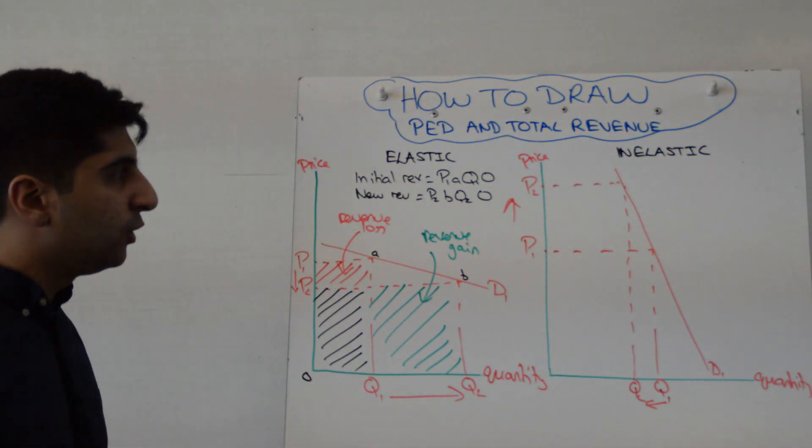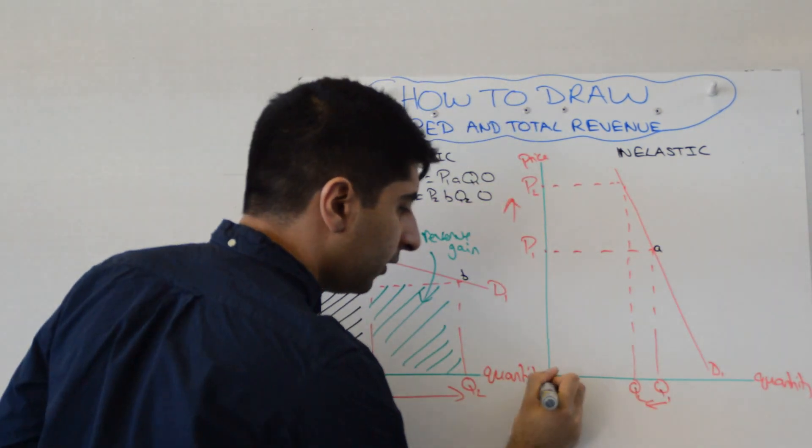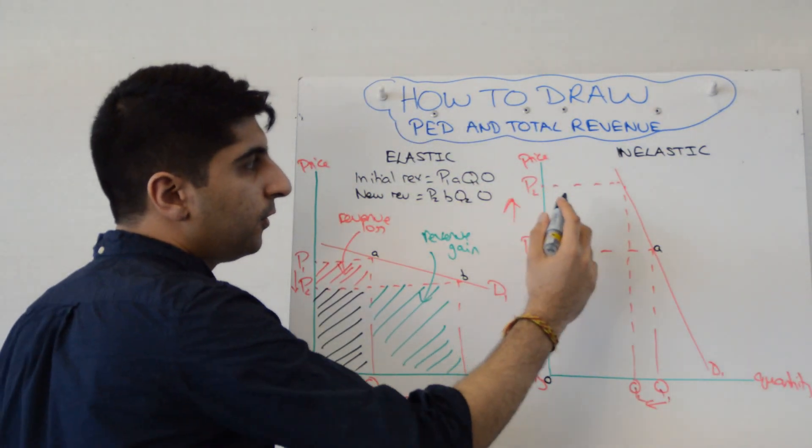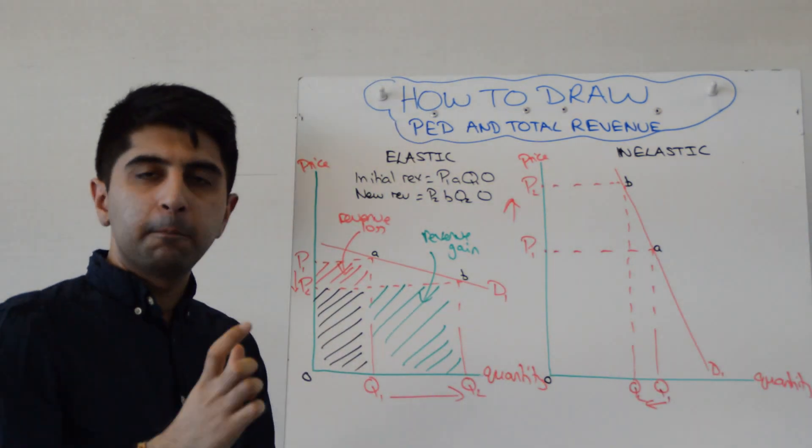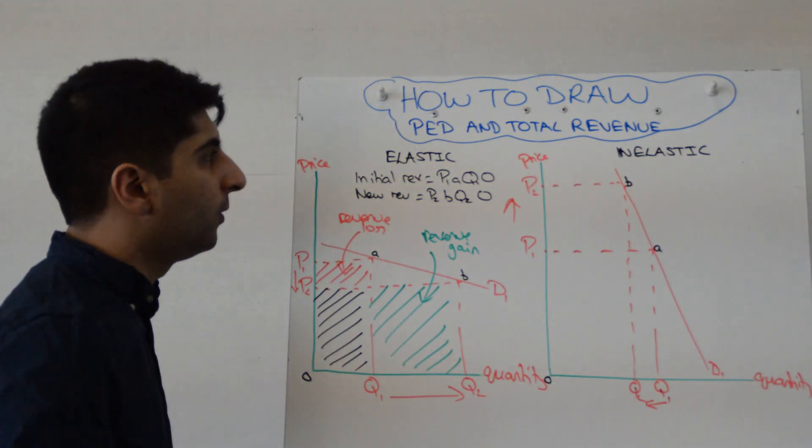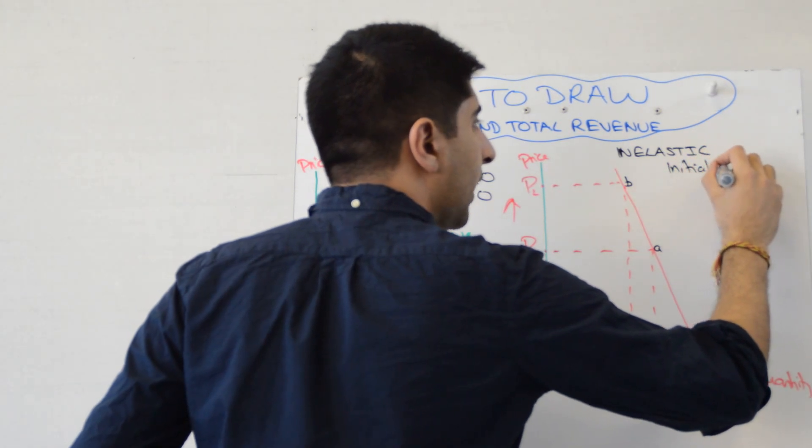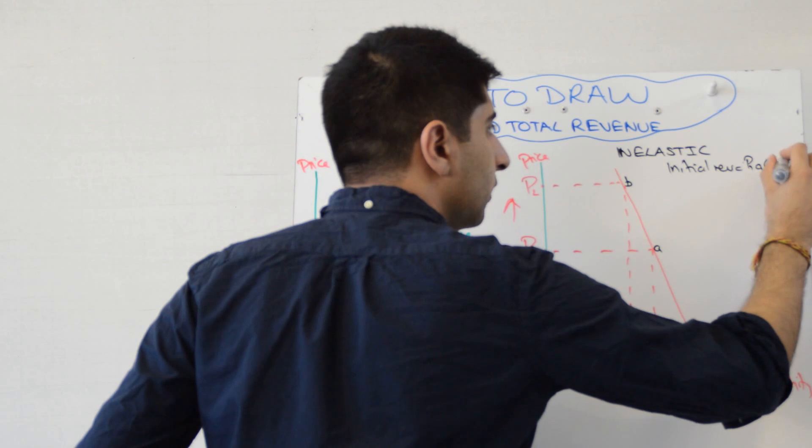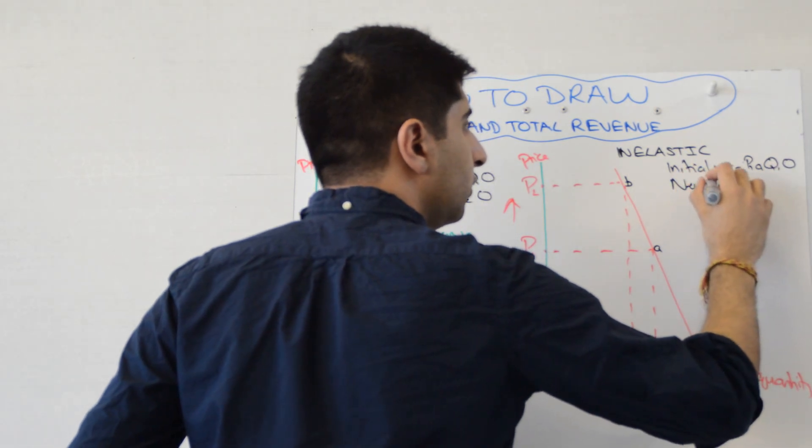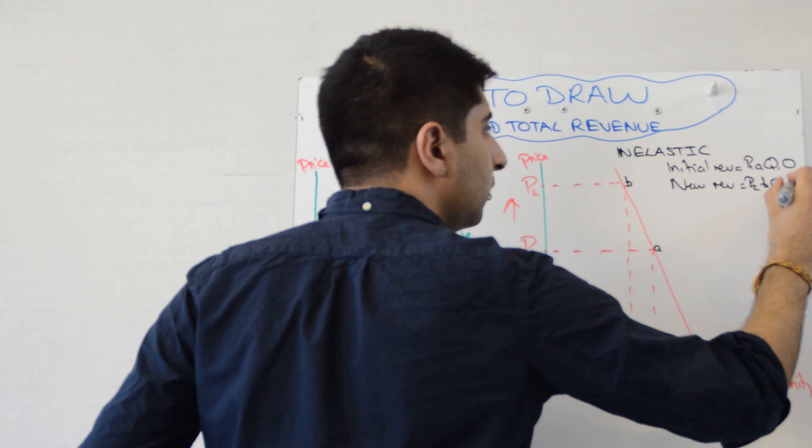And again, we want to show initial and new revenue. So initial revenue was P1, A, Q1, 0. New revenue is P2, B, Q2, 0. Yeah? Price times quantity to work out revenue. So let's quickly write that in. So initial rev is equal to P1, A, Q1, 0. Whereas new revenue is equal to P2, B, Q2, 0.